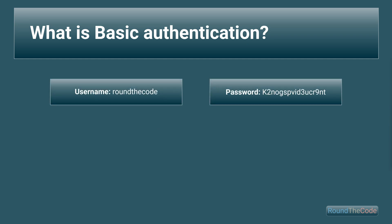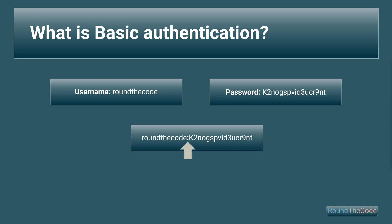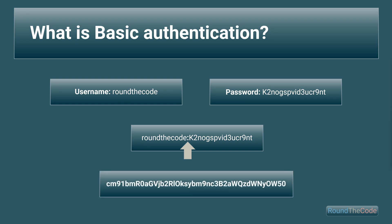To generate the base64 encoded hash, just say we have a username and password. We would join the username and password into a string with a colon separating the two. As a result, it means that the username cannot have a colon in it. This string is then encoded using base64 and generates a hash that we can use to send as part of the HTTP request.